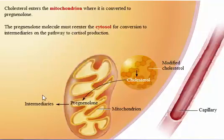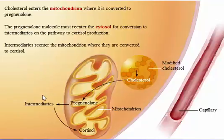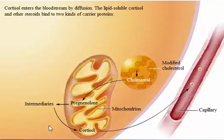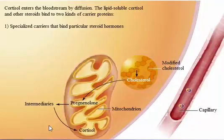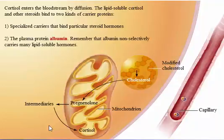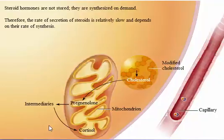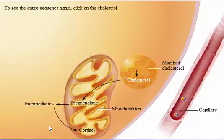The pregnenolone molecule must re-enter the cytosol for conversion to intermediaries on the pathway to cortisol production. Intermediaries re-enter the mitochondrion where they are converted to cortisol. Cortisol enters the bloodstream by diffusion. The lipid-soluble cortisol and other steroids bind to two kinds of carrier proteins: specialized carriers that bind particular steroid hormones, and the plasma protein albumin. Steroid hormones are not stored; they are synthesized on demand. Therefore, the rate of secretion of steroids is relatively slow and depends on their rate of synthesis.